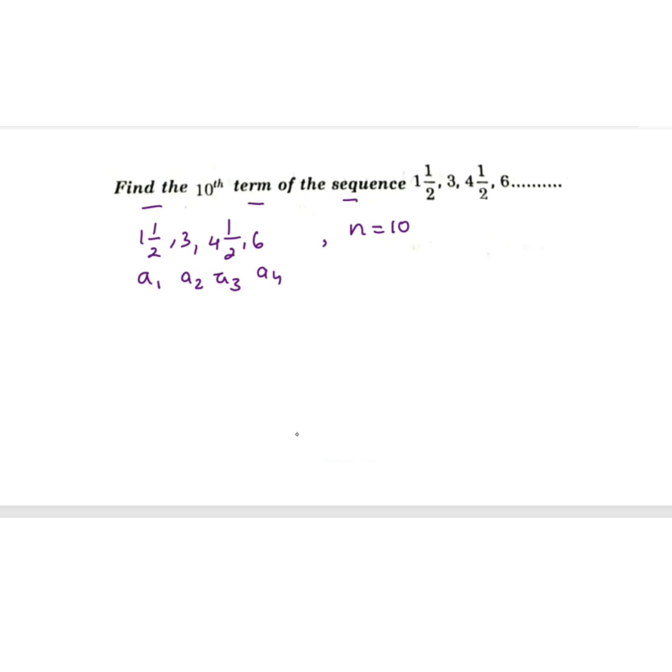First convert mixed fraction into proper fraction. 1, 1 by 2 can be written as multiply 2, 1s are 2 and add with 1, that's 2 plus 1, numerator divided by denominator as it is, that will be 3 by 2. The first one becomes 3 by 2, then second one is 3, then 4, 1 by 2: multiply 4, 2s are 8, then add the numerator 1, 9 divided by 2. That will be 9 by 2, and 6.